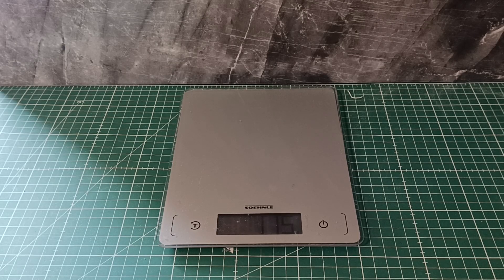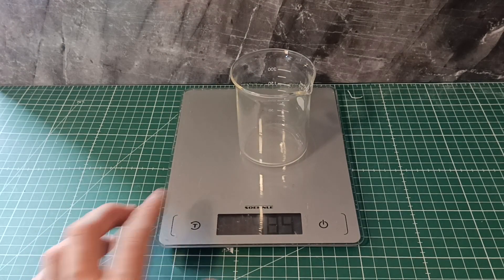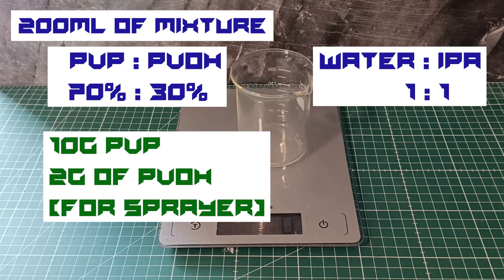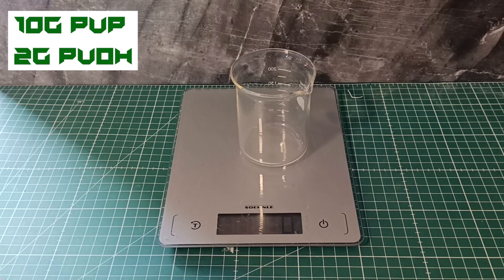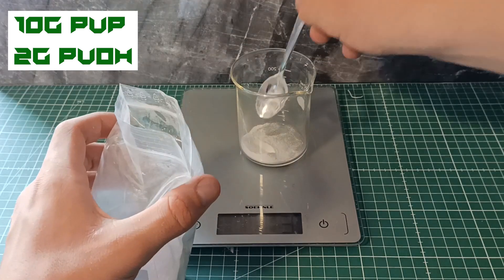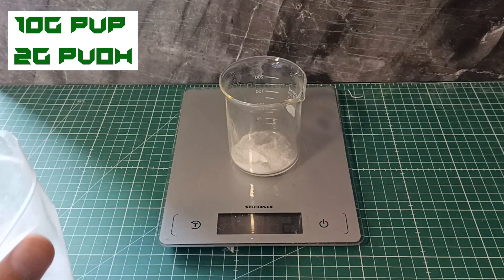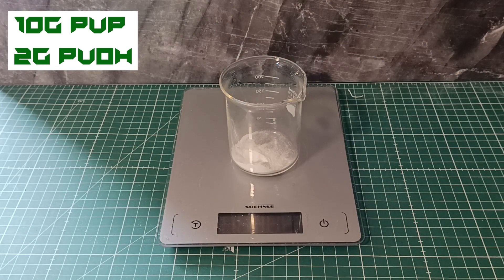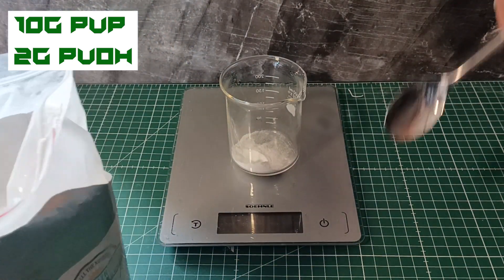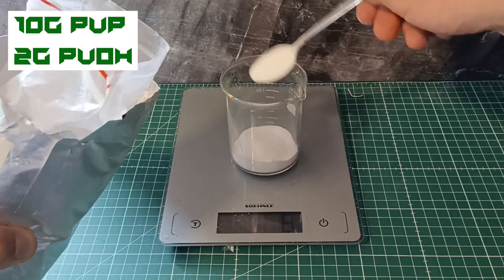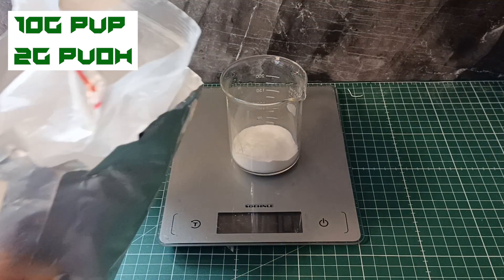In order to get started, let's put our container onto the scale and zero it out. For around 200 milliliters of our bed adhesive, I'm adding 10 grams of PVP and 2 grams of PVOH. So, let's start with the PVOH. And the display shows 2 grams. Nice. One more, and we got 10 grams. Nice.